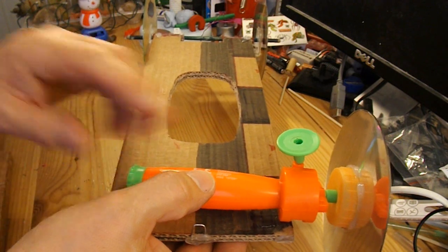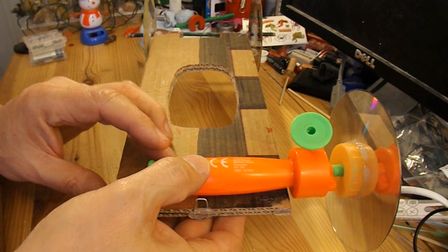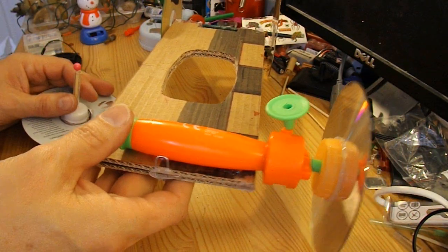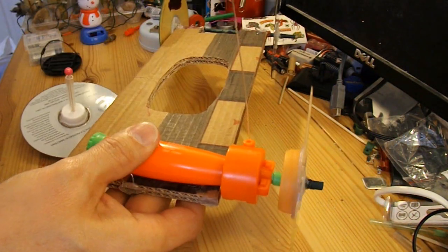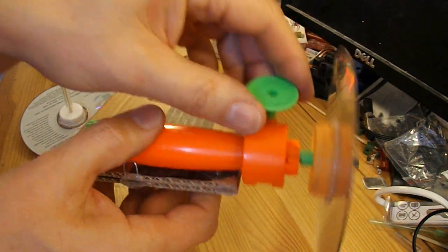And as I say, put another wheel on the other side so we've got four wheels. Let's see if we can get it to go. Alright, I've hot glued that in place. So that works. What we now need is a wheel on the other side to balance it.